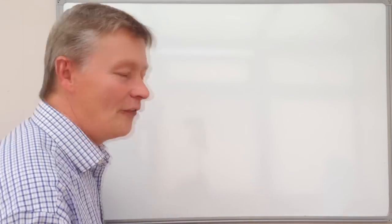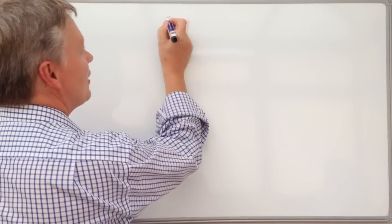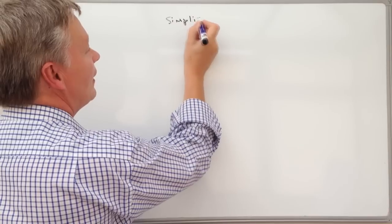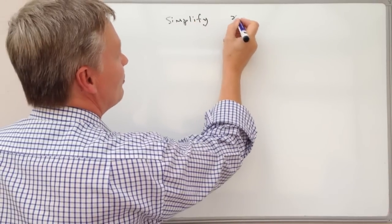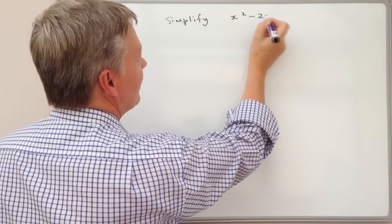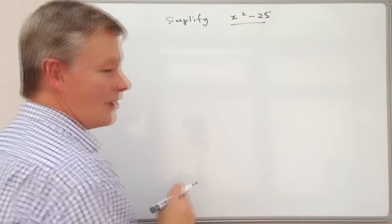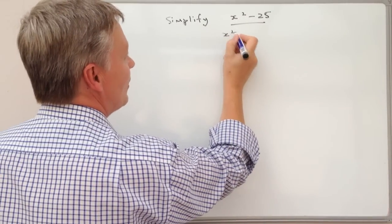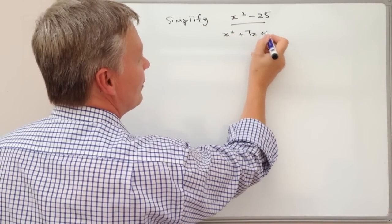The way that they'll be written it will say something like simplify and it's going to be x squared minus 25 divided by x squared plus 7x plus 10.